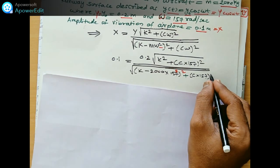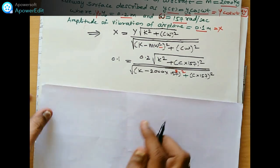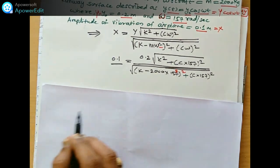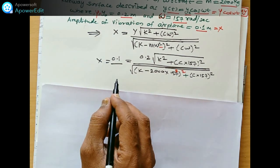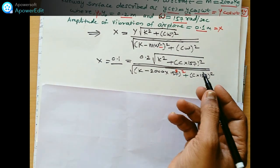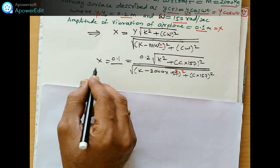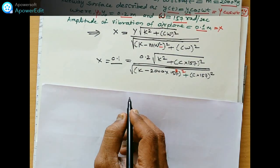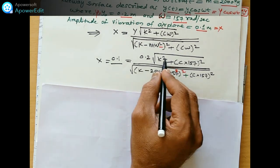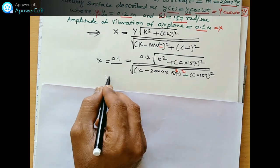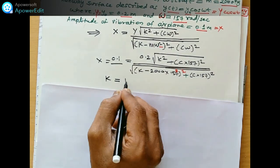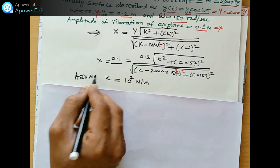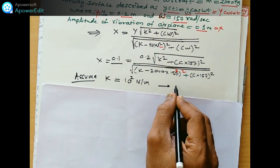This x capital X, this amplitude body, and this y is the amplitude for the support. This is the amplitude for the body x. Now we have to find out this value of k and c. These two unknowns are there in this equation. So we have to assume here k 10 raised to 7 newton per meter.